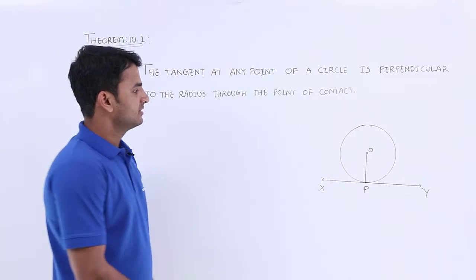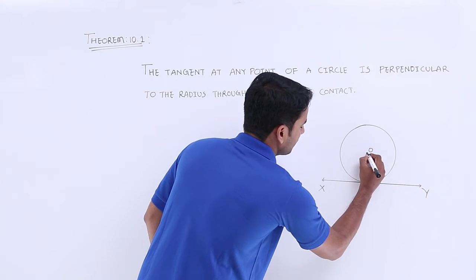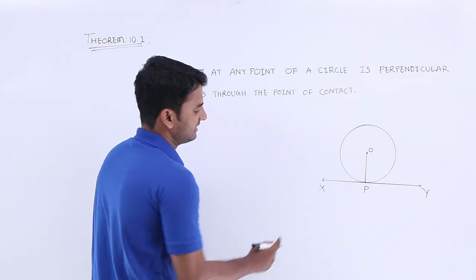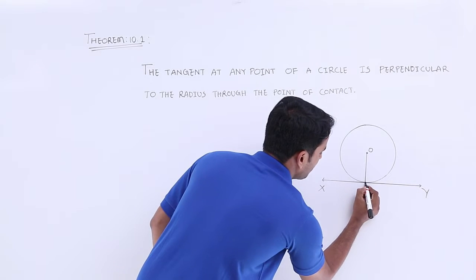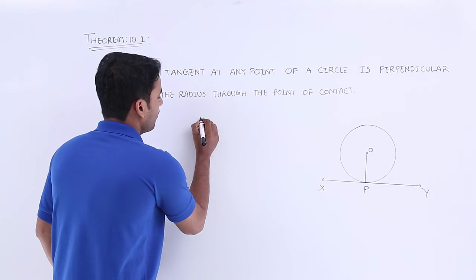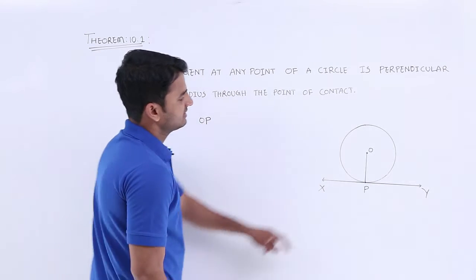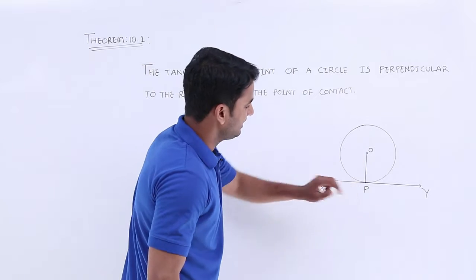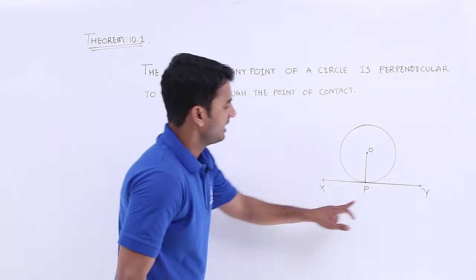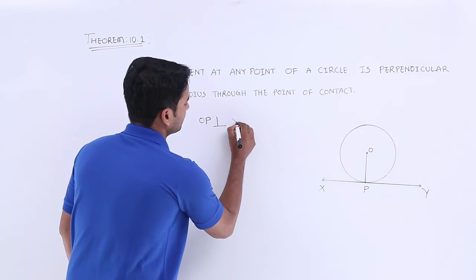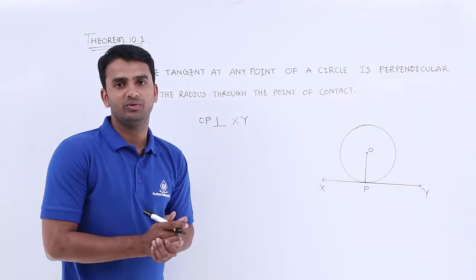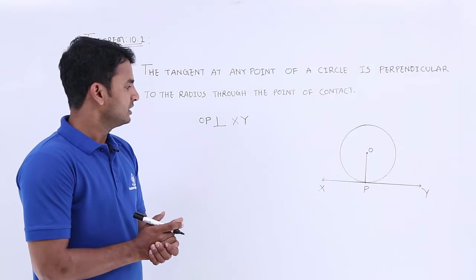Here a circle is given — this is a circle with center O, and it has a tangent XY through the point P. We have to show that OP, that is the radius, is perpendicular to XY, the tangent. So this is what we have to prove.